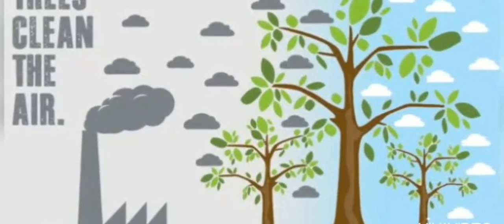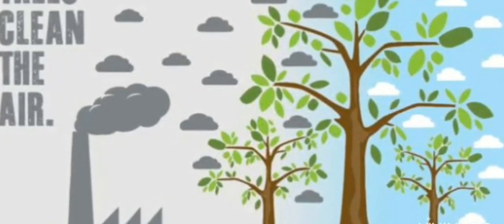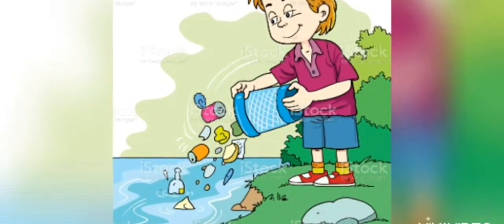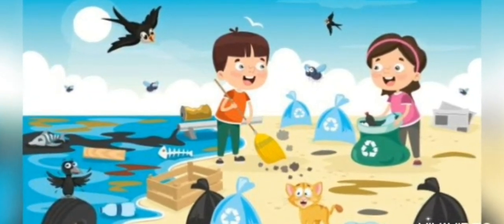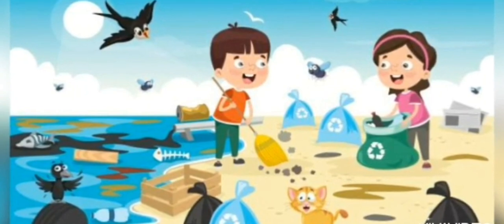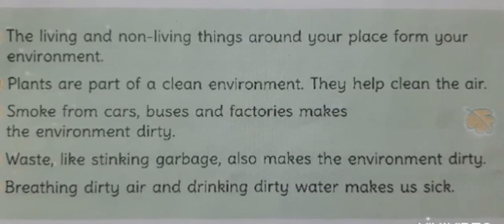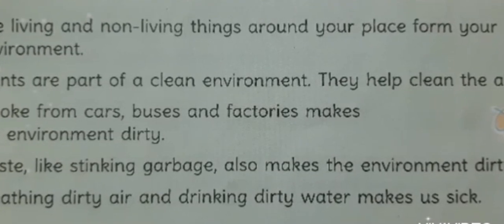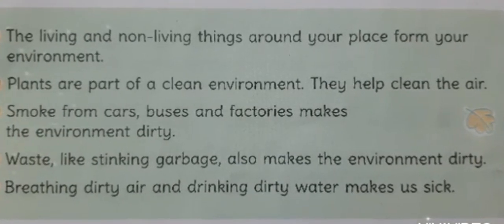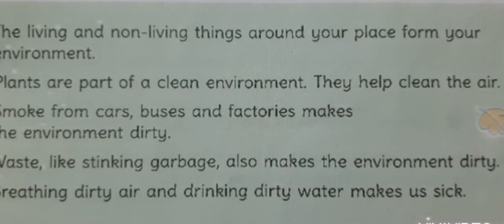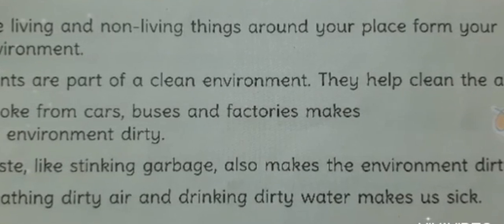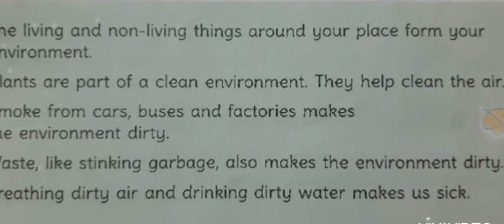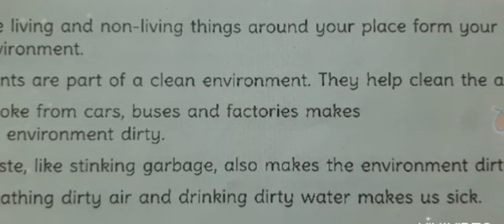To avoid this, we should plant more trees. Trees clean the air and give us fresh air to breathe. We should not throw garbage into the river. We should keep our environment clean. In this lesson, we have learned that the living and non-living things around your place form your environment. Plants are part of a clean environment and help clean the air. Smoke from cars, buses, and factories make the environment dirty. Waste like stinking garbage also makes the environment dirty. Breathing dirty air and drinking dirty water can make us sick.